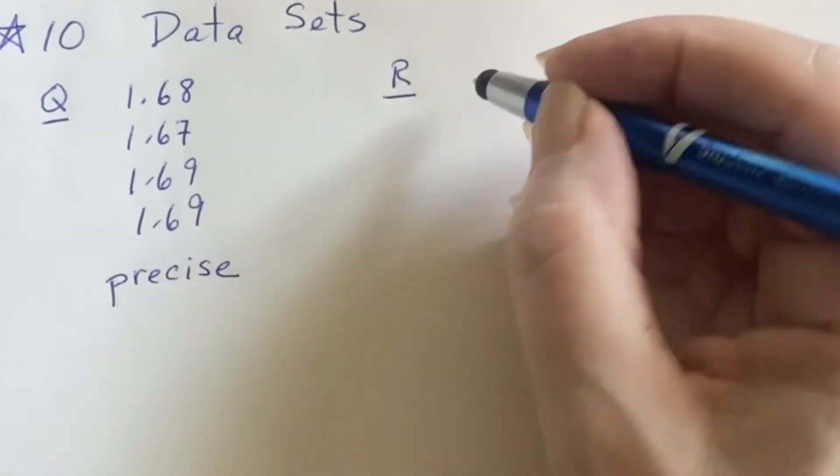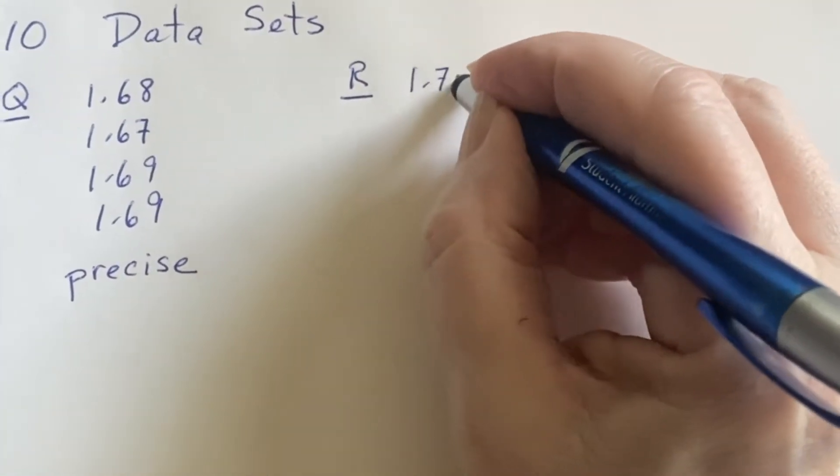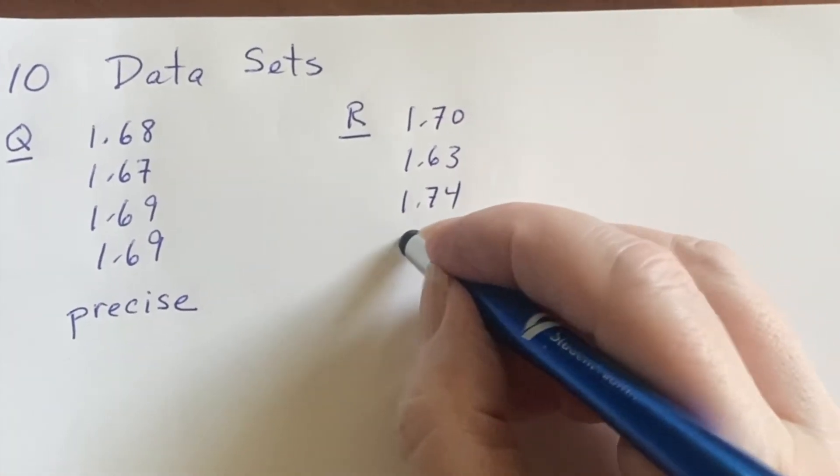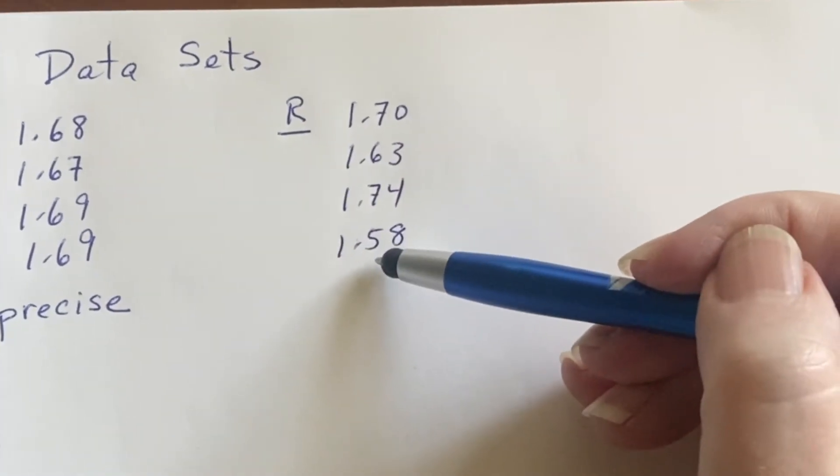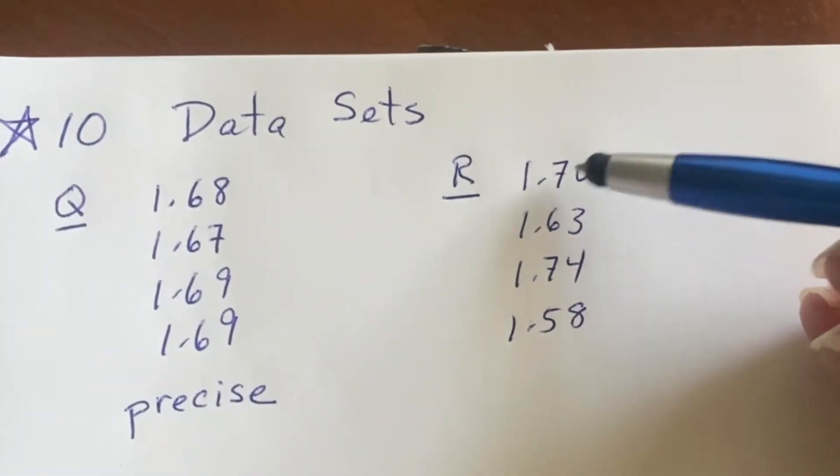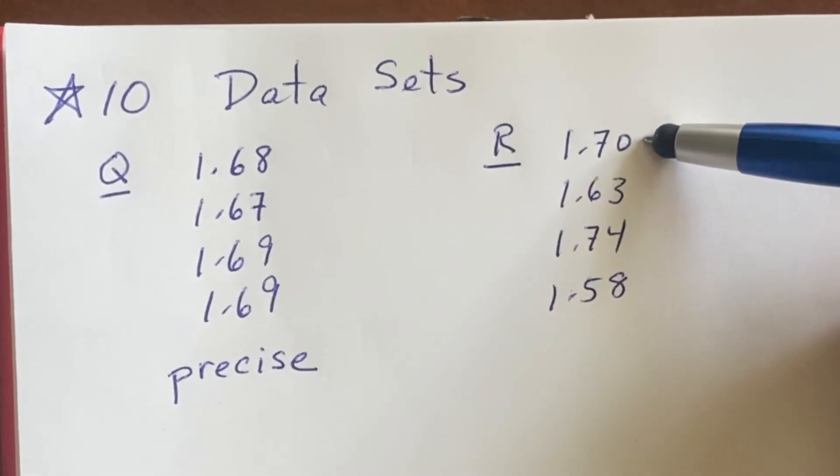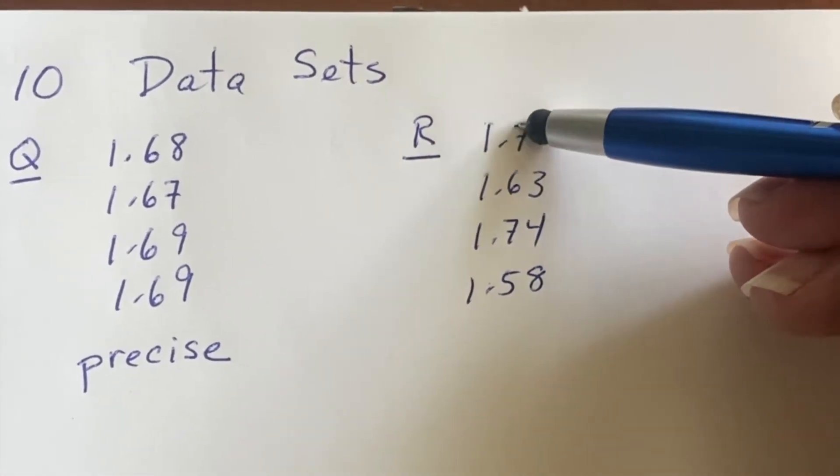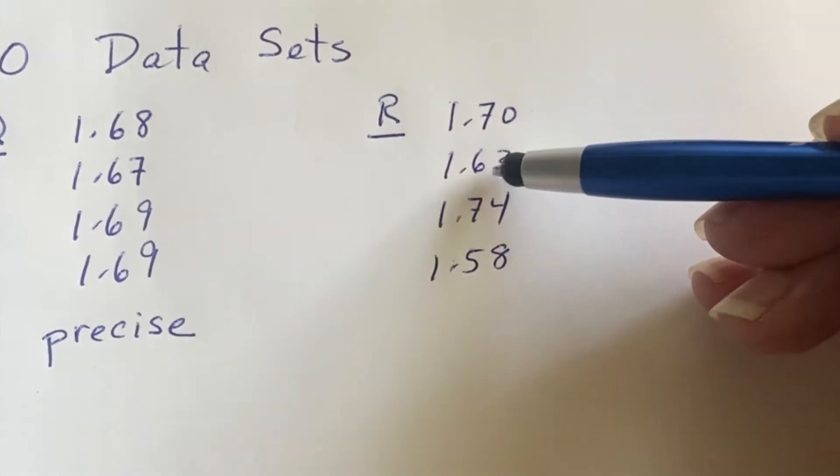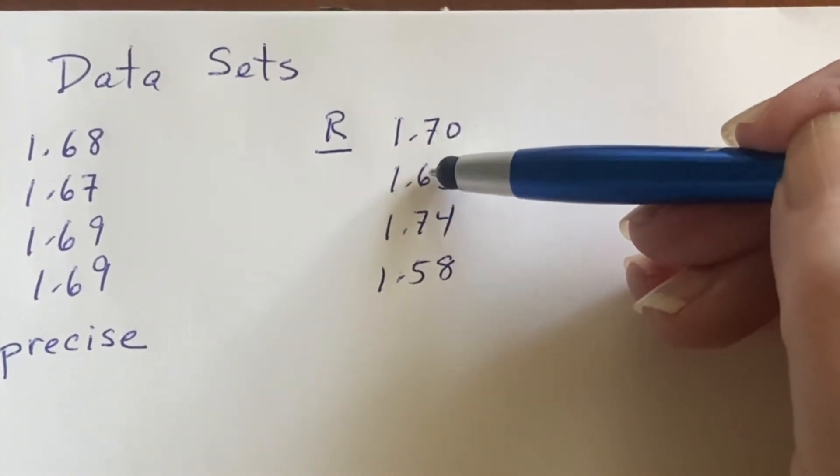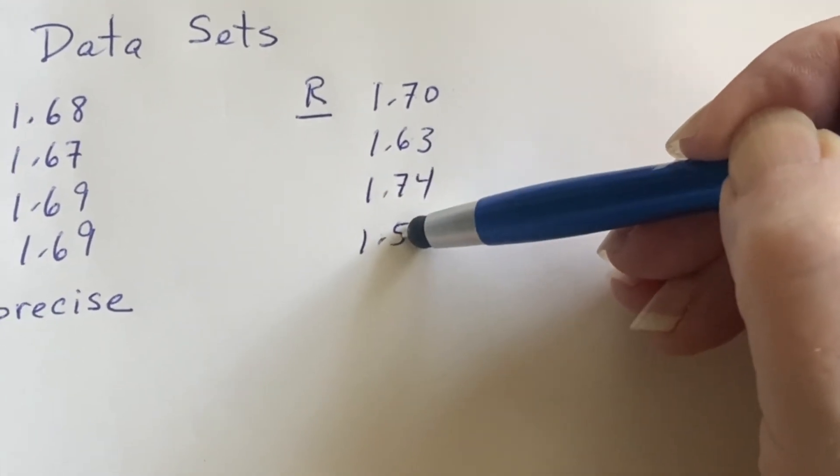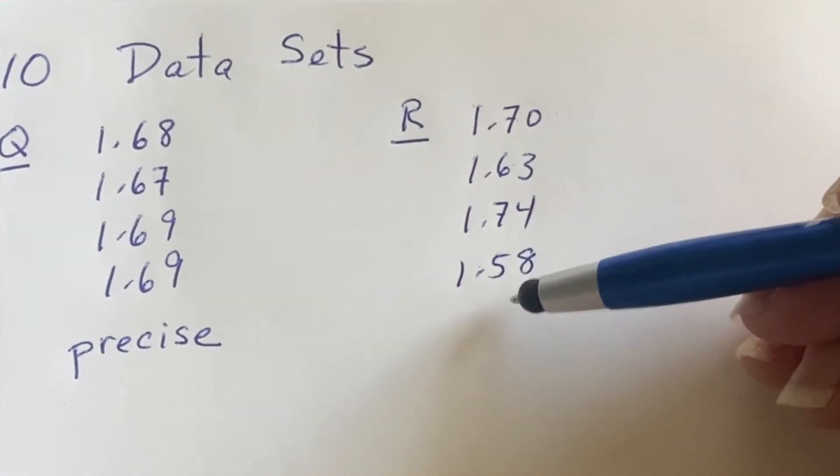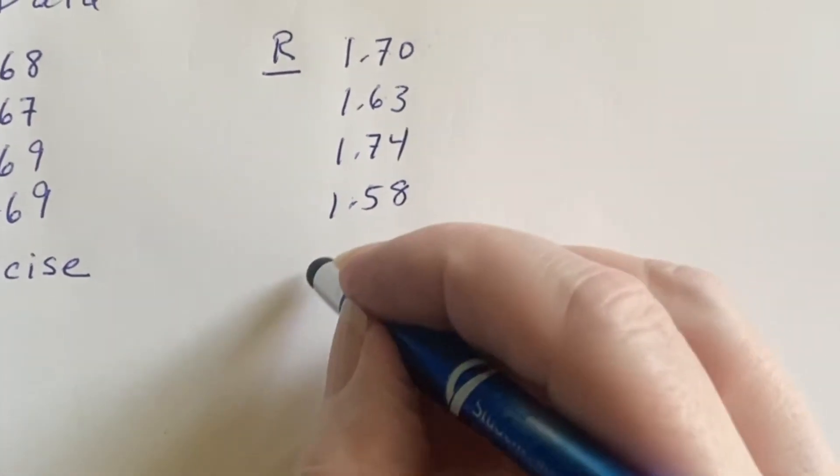Here's another data set that somebody came up with. They got 1.70, 1.63, 1.74, and 1.58. These are really not near each other. I mean, think about what we're saying. We said that when we wrote this down, we were writing it down using significant figures. And so we were sure of the first one. You're sure of the second one. And the third one was a guess. But look, this was a seven. This is a six. That's a seven. That's a five. I'm starting to wonder if I really should be able to say I have three sig figs for these. I'm not so clear. So this is not precise.